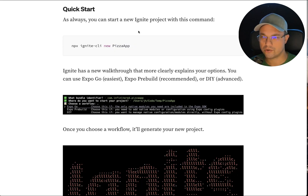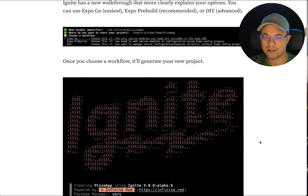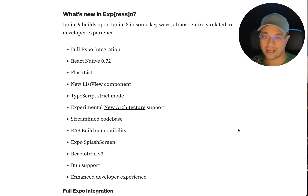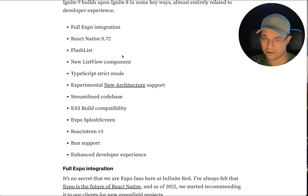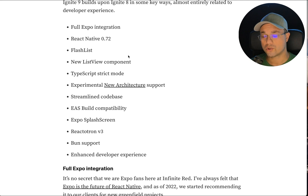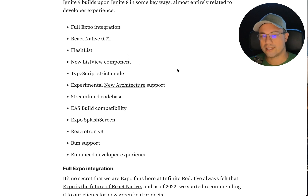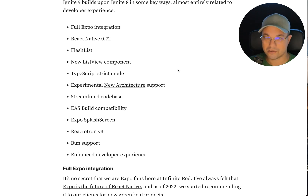This goes through how to generate a new Ignite project — NPX Ignite CLI, new pizza app. It has a new walkthrough that explains all your options really well and then generates your project. What's new in Ignite 9? Full Expo integration, React Native 0.72/0.73 coming soon, Flashlist integration, a new ListView component that switches between Flashlist and Flatlist smartly, TypeScript strict mode, experimental new architecture support, a streamlined codebase, EAS build compatibility, Expo Splash Screen, Reactotron v3 support, Bun support, and overall developer experience improvements.